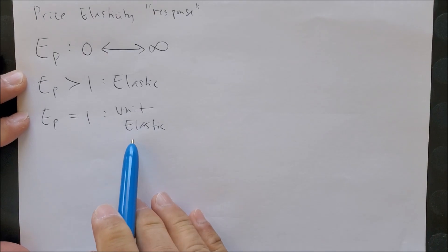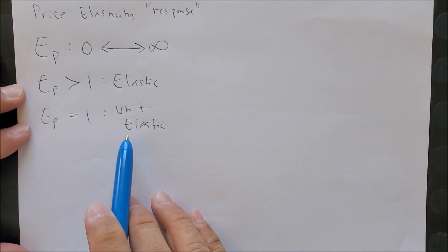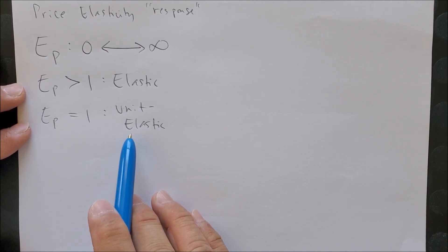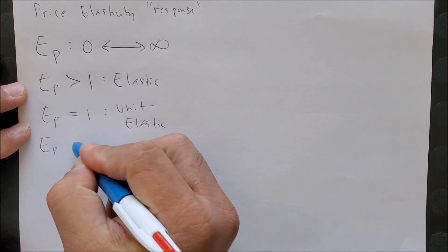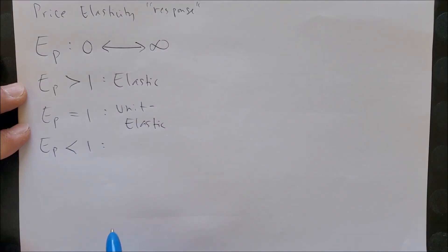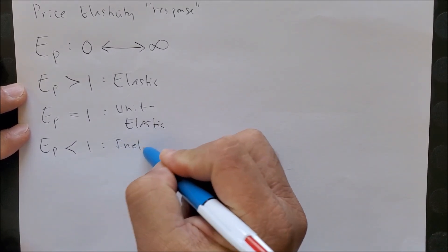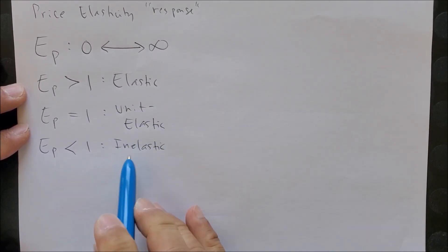Next, if we have a number that is equal to one, we can call this unit elastic, which means your response is indifferent—you're kind of like, whatever, when the price of a good changes.